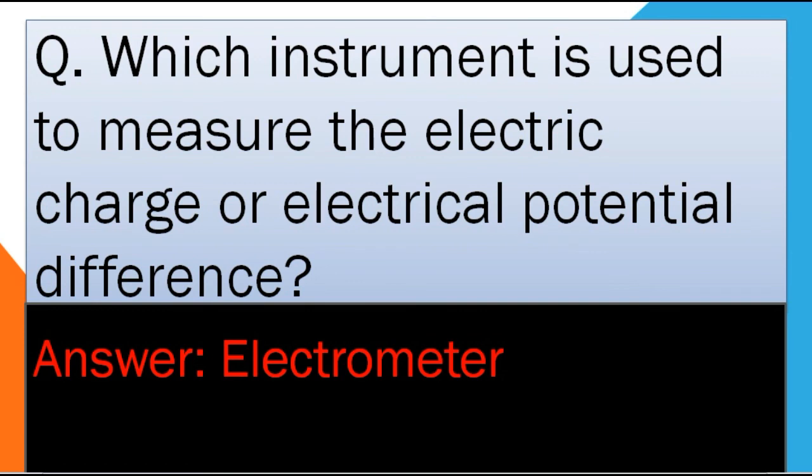Which instrument is used to measure electric charge or electric potential difference? The answer is Electrometer. Electrometer is an instrument which is used to measure electric charge or electric potential difference.